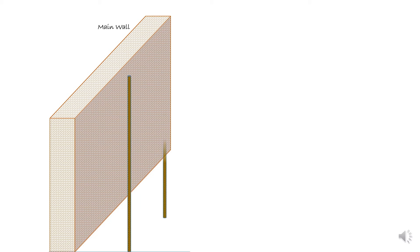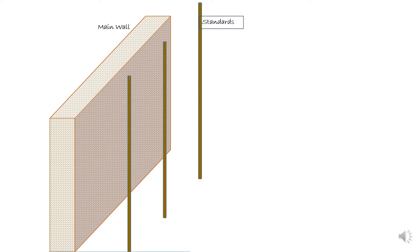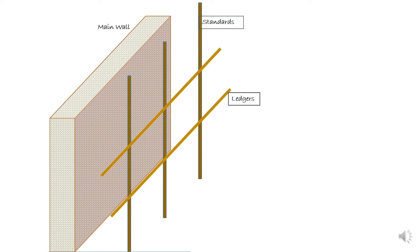The first main part of scaffolding is standards. Standards are vertical members of the framework that are supported on the ground, on drums, or embedded into the ground. Then we have ledgers — these are horizontal supporting members that run parallel to the wall or the facing main structure.